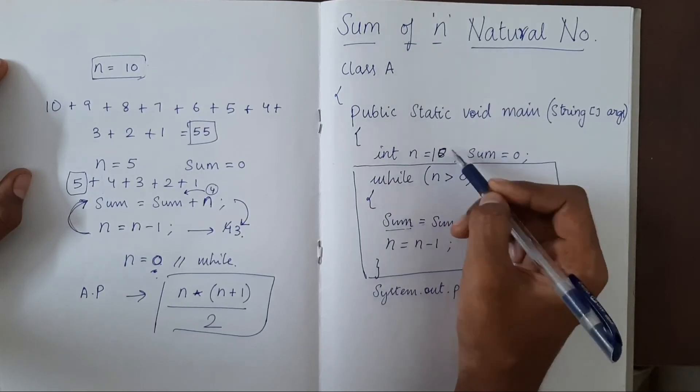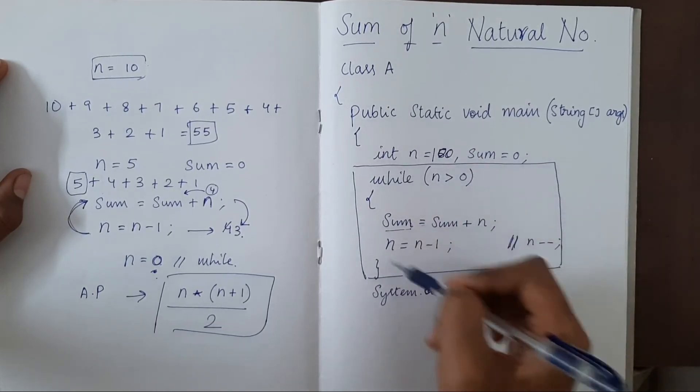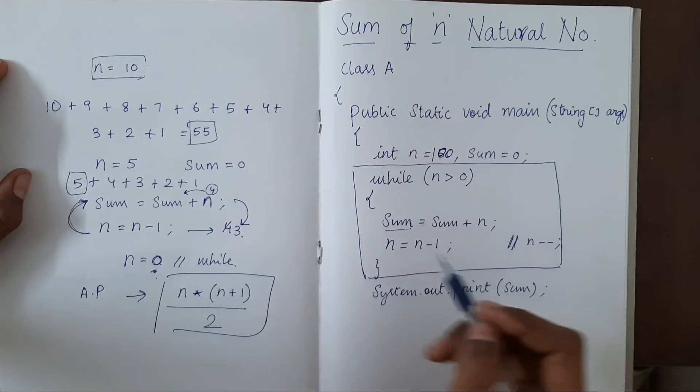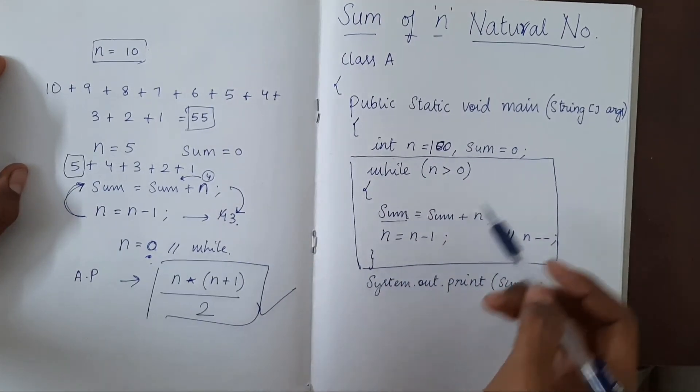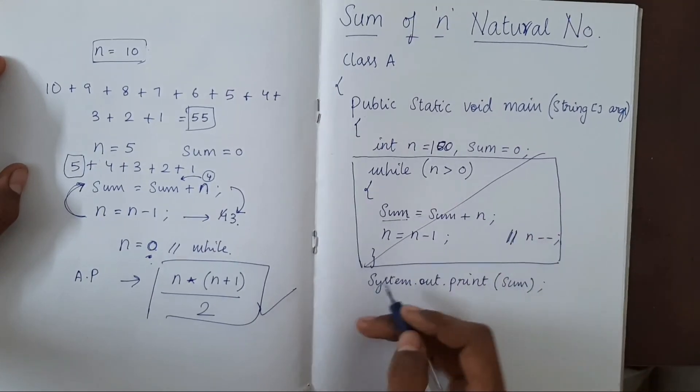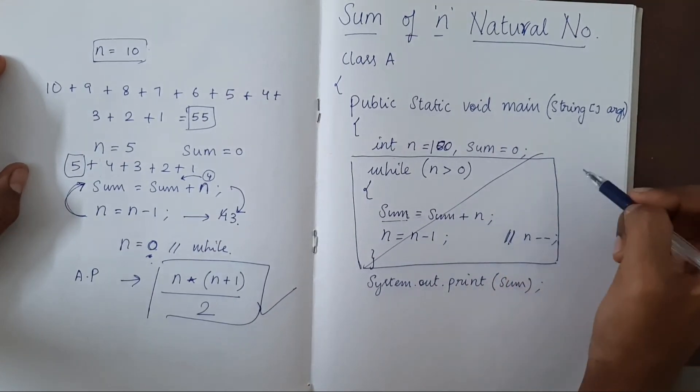The problem with this while loop is, if n was 100, this loop has to run 100 times. So instead of that, if we use this formula, it will be much simpler. Instead of this whole thing, we will replace this.